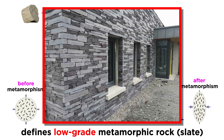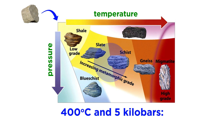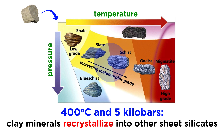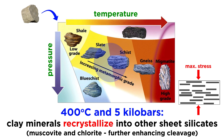Slate makes great building stones because of its good cleavage, which causes it to break along nice, planar surfaces. As we continue to ramp up the pressure and temperature to around 400 degrees Celsius and 5 kilobars, the clay minerals will begin to recrystallize into other sheet silicates, most commonly muscovite and chlorite, which will grow with their sheets, or basal cleavage, lining up perpendicular to the main stress, further enhancing the rock's cleavage.